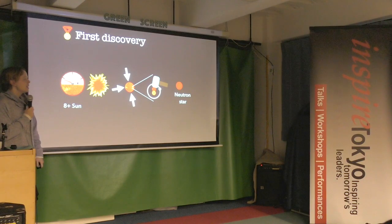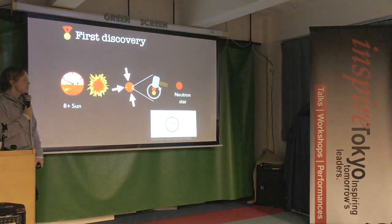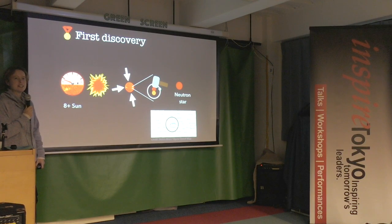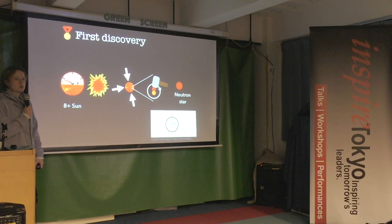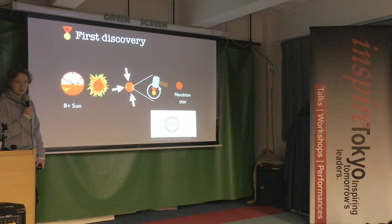A neutron star is immensely tiny and dense — only about the size of a city, yet with a mass between 1.4 and twice that of the Sun. The statistic is that if you could squeeze the whole human race into a sugar cube, that is how dense a neutron star is.